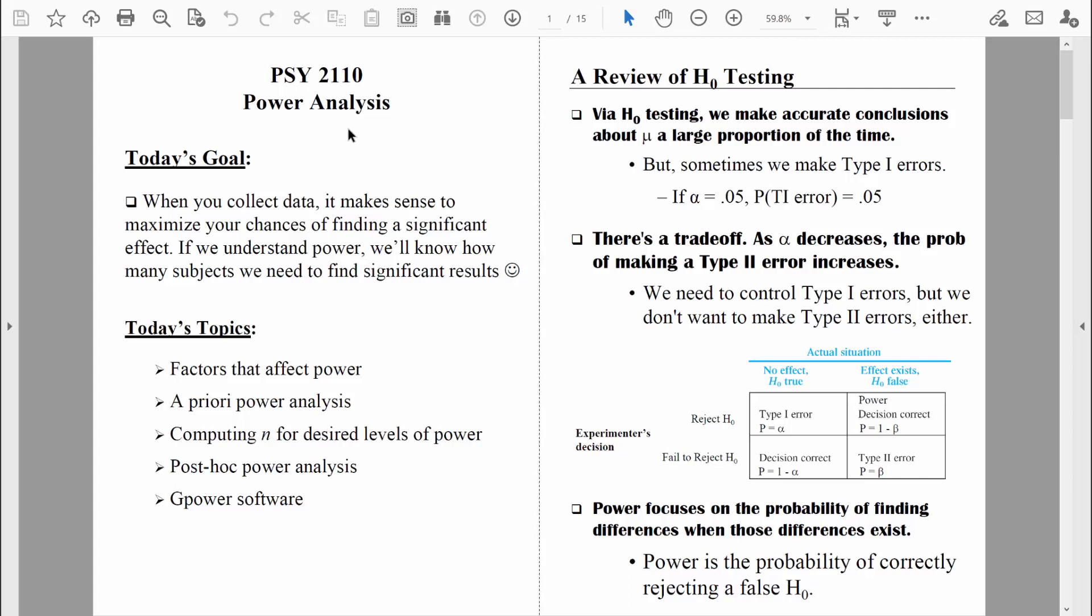Welcome back everybody. Let's continue to talk about power analysis. So far, we've learned how to compute two different types of power analyses. One is the a priori power analysis. That's the type of power analysis you should compute before running a research study to determine how large your sample size should be. And we've also learned how to compute a post hoc power analysis. That's the type of power analysis you would run after the fact, after you've already collected data.